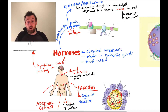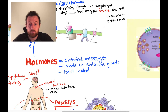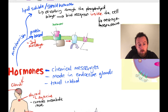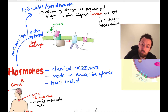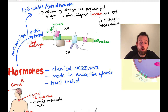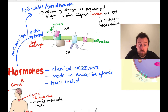The second messenger pathway works as follows. A hormone binds to a receptor on the cell membrane. The receptor is associated with something on the inside called a G-protein — in fact, the receptor is called a G-protein coupled receptor. When the hormone binds, a conformational change occurs — a slight change in shape — and that change in shape causes a change in shape of the G-protein, almost like dominoes falling.